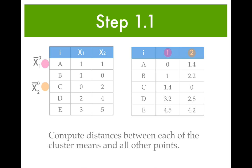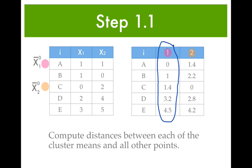So the first step is to calculate the distance between each observation and each of those means. This column shows the distances between observations A, B, C, D, and E and the mean for cluster 1. The distance between A and the mean for cluster 1 is 0, because they're the same point. The distance between B and the mean for cluster 1 is 1, since 1 minus 1 is 0 and 1 minus 0 is 1.